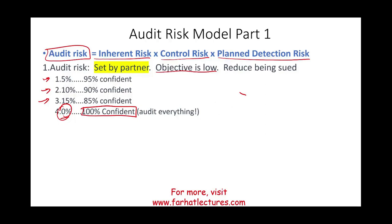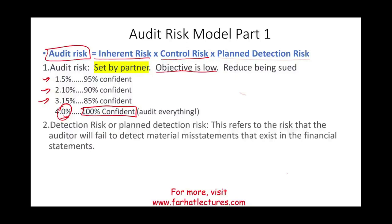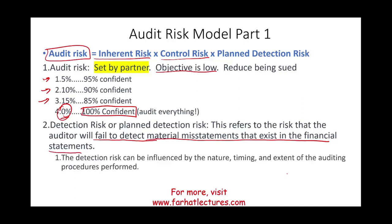This number is set by the auditor. Now let's discuss detection risk, or planned detection risk. This refers to the risk that the auditor will fail to detect the material misstatement that exists in the financial statement. Detection risk is going to be influenced by the nature, timing, and extent of the auditing procedures — how much work you are willing to do.